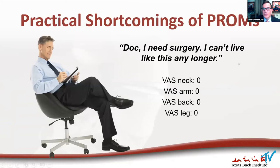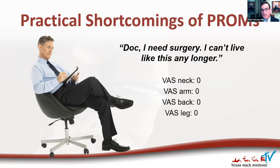We've all seen this patient who says he can't live like this any longer, but his VAS scores are zero all the way down. Part of it might be that this patient filled the form out sitting in the waiting room — he's got no pain when he sits, then stands up and is in 10-out-of-10 pain. It's unclear how they should be filling these forms out, and that's not really captured in a lot of the patient reported outcome measures.